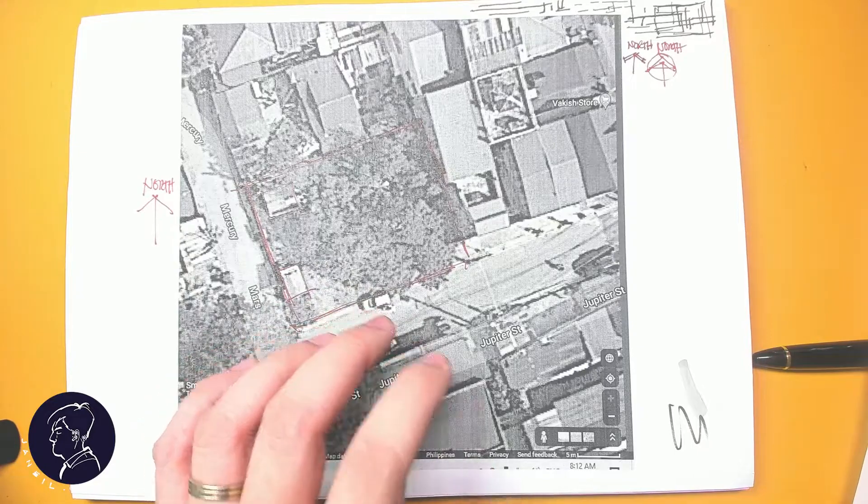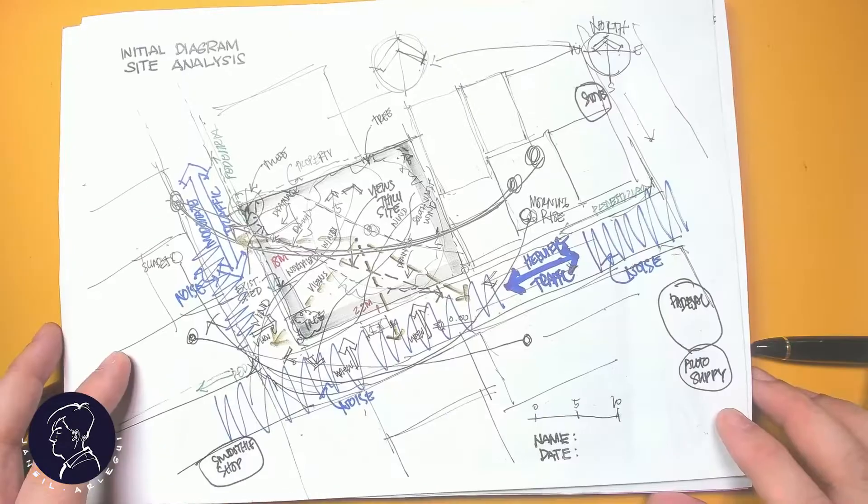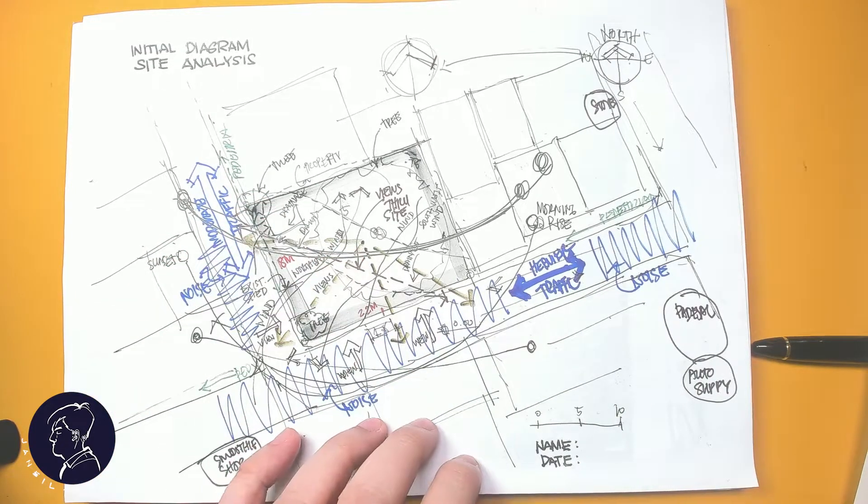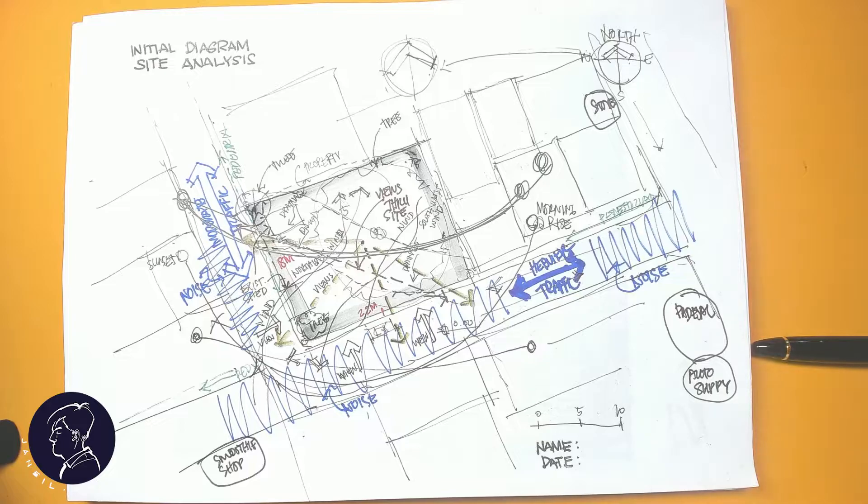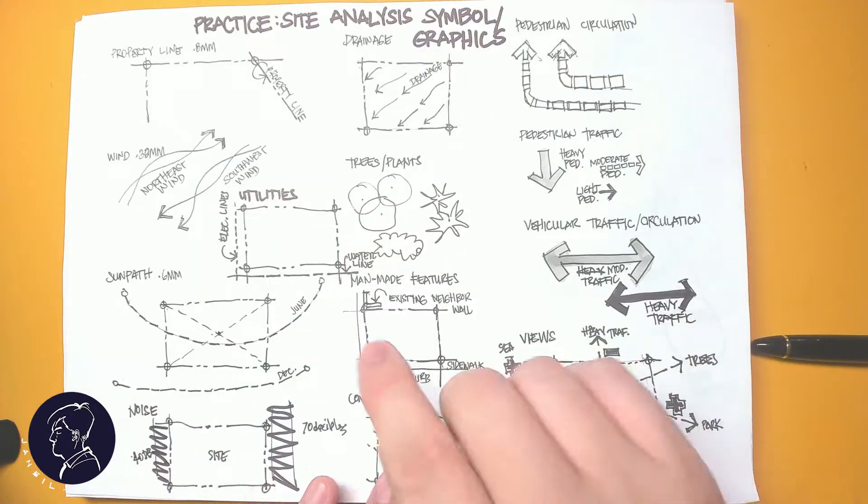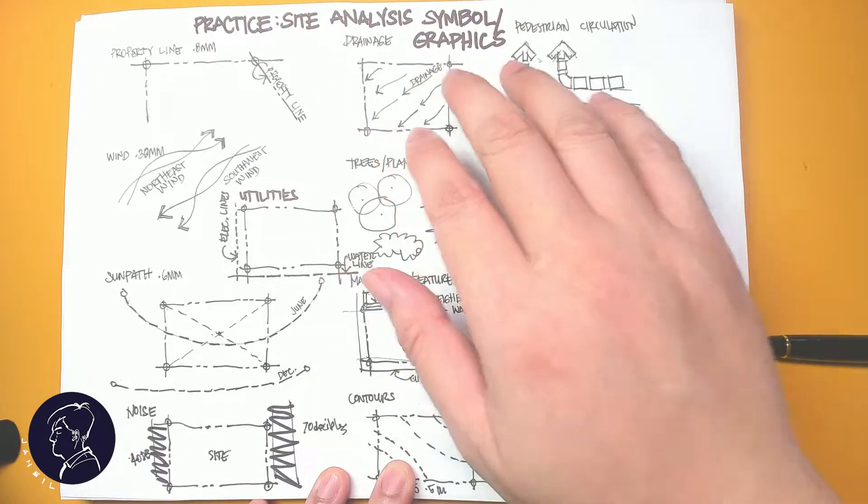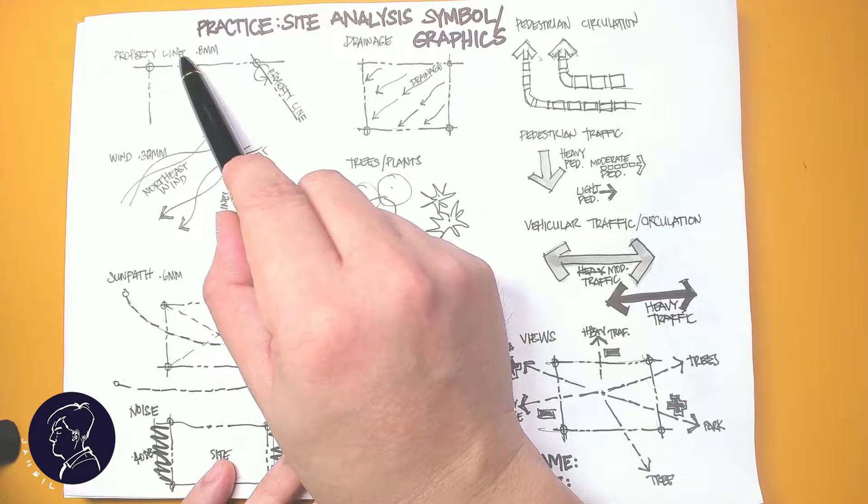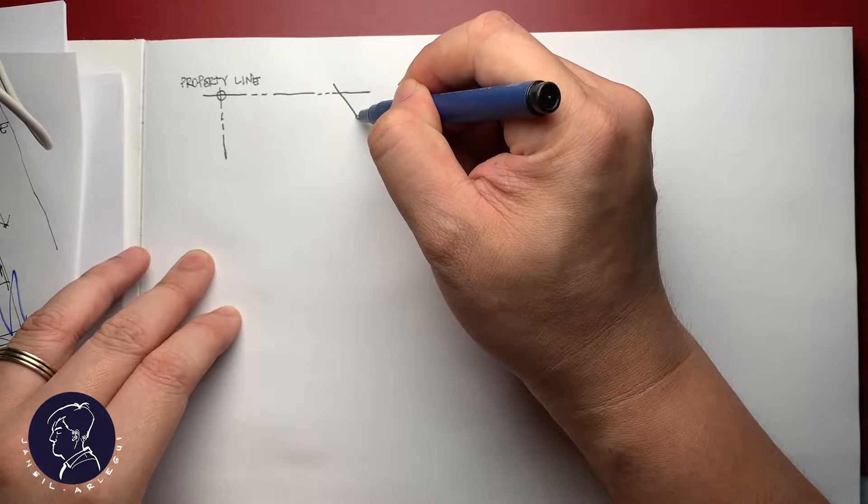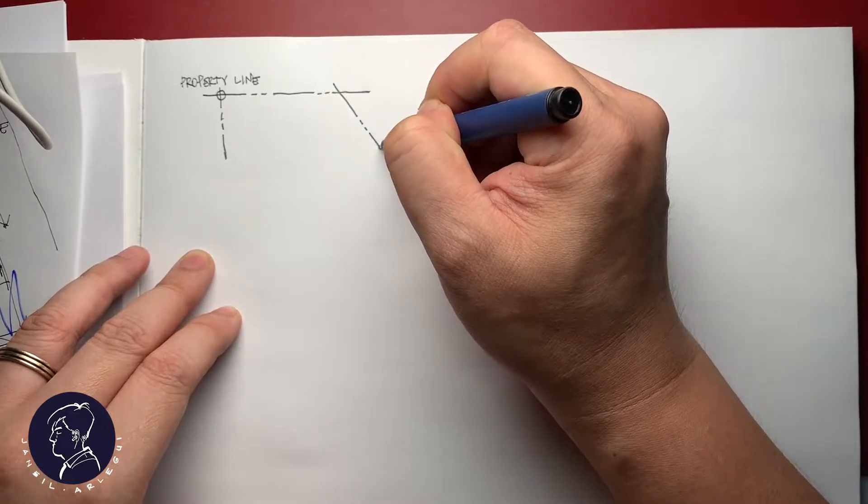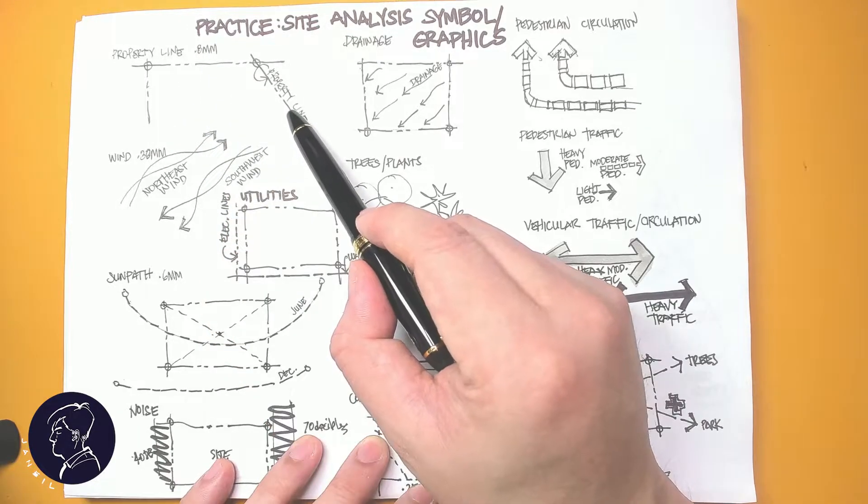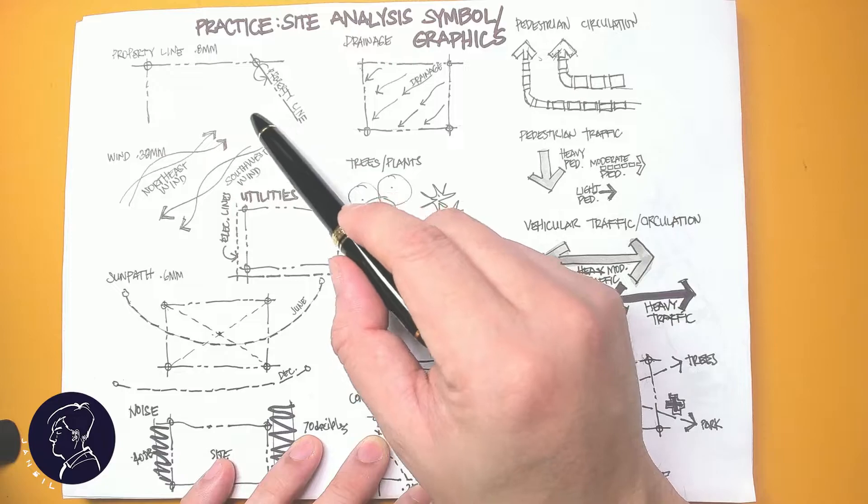So I use this printout to first initially draw this initial site analysis. But before that, you need to know what information that you need to be gathering and how to symbolize them in graphical form. For example, you need to draw your property line by using this sort of line type or line style. It has a long line with two short dashes to differentiate this line from the rest as property line.